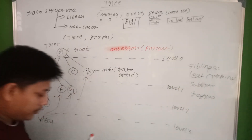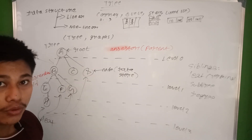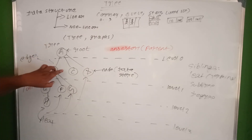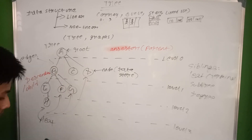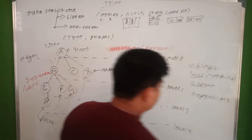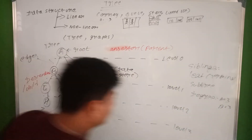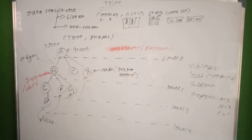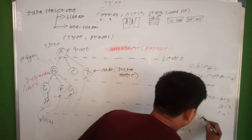The degree of a node refers to the number of sub-nodes or children it has. The degree of A is 3, the degree of B is also 3, and the degree of E is 1.